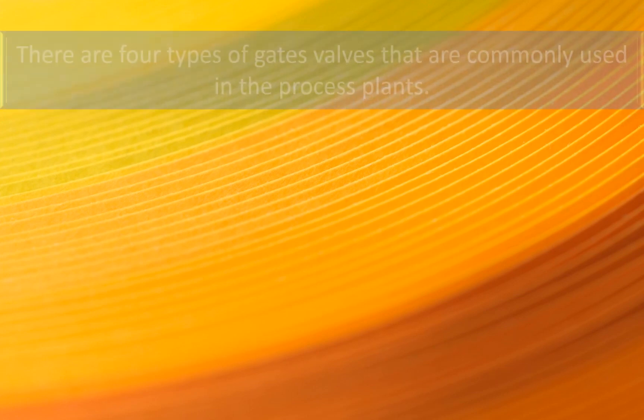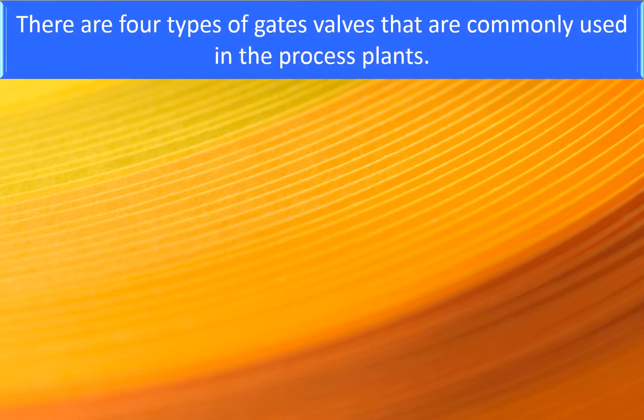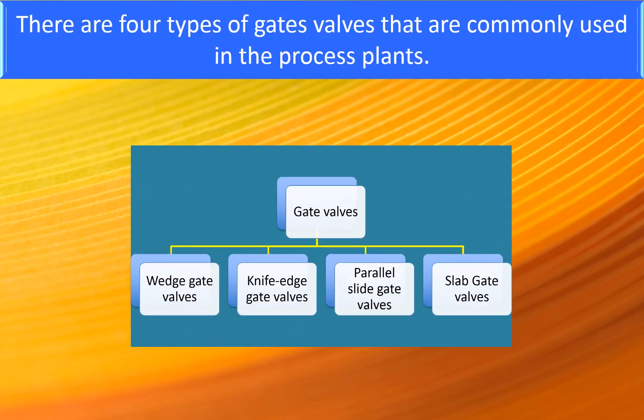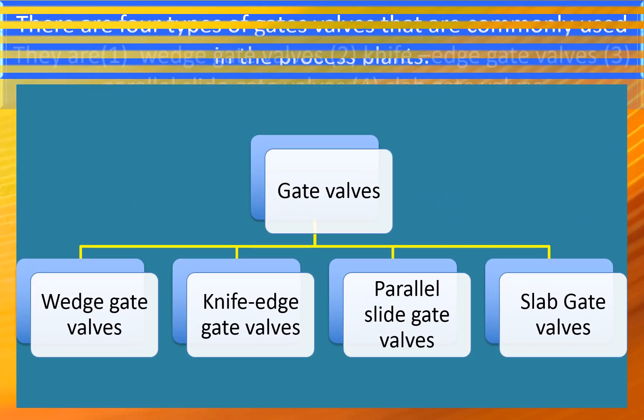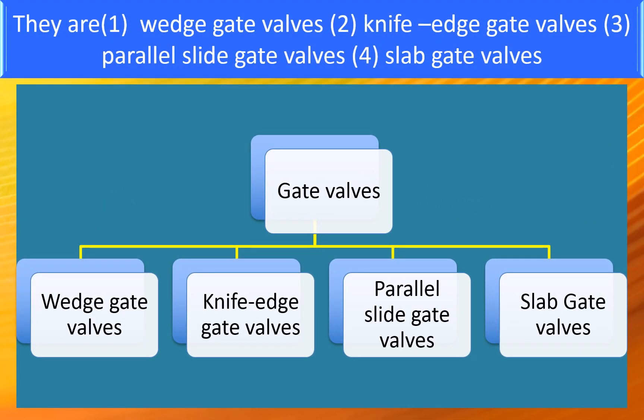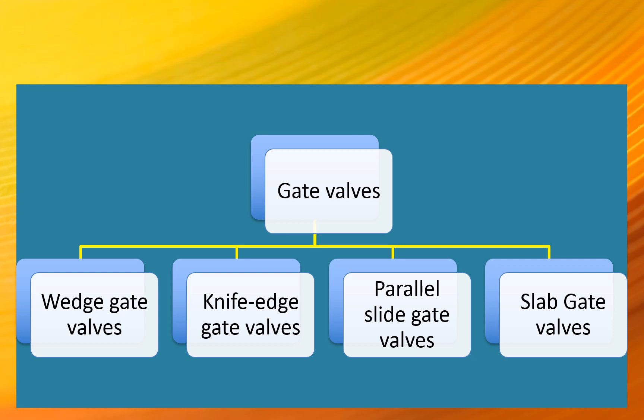There are four types of gate valves commonly used in process plants: 1. Wedge gate valves, 2. Knife edge gate valves, 3. Parallel slide gate valves, 4. Slab gate valves.